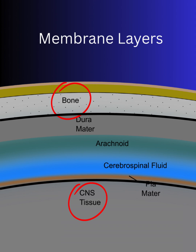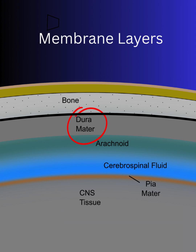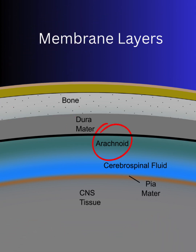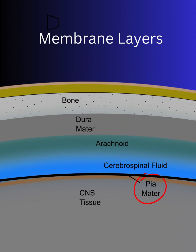The meninges of the craniosacral system comprise a triple-layered membrane system that surrounds, supports, and protects the neural tissue of the central nervous system. It's located between the bones and the central nervous system tissue. The dura mater forms a tough, fibrous outer layer against the bone. The arachnoid is a porous, spongy membrane that adheres to that tough outside layer. The pia mater is a single-celled layer that paves the surface of the central nervous system.